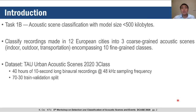Task 1B is an acoustic scene classification task which has been the mainstay of the challenge, but this year with an added constraint that the model size should be below 500 KB. The aim of this task is to classify recordings into three coarse-grained classes of acoustic scenes, labelled indoor, outdoor, and transportation. These coarse-grained classes are also subdivided into 10 fine-grained classes.